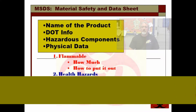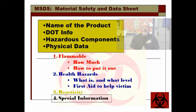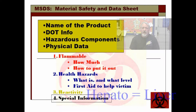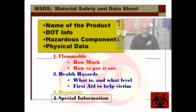MSDS and SDS are the same thing — Material Safety and Data Sheets, or Safety and Data Sheets. What these are are information booklets that identify the product, who makes it, how you can get more information, what may be hazardous in it, and what care you would give to somebody who got this chemical on them.